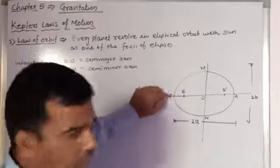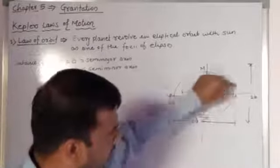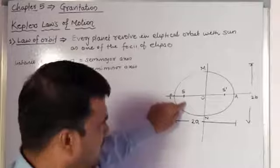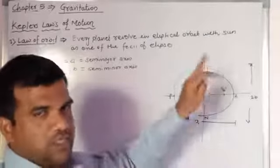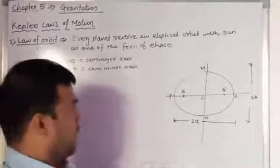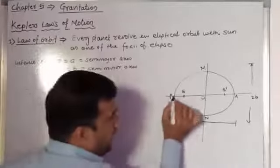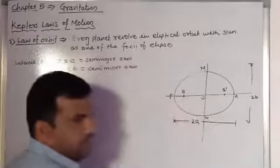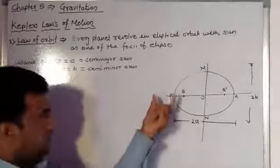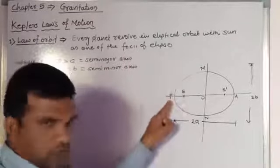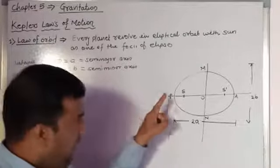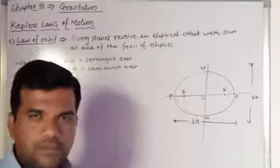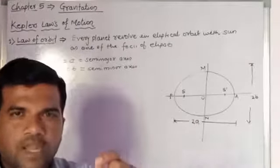Suppose P is the planet revolving in an elliptical orbit around the sun. When the planet is at position P and is very close to the sun, that position is called perihelion.